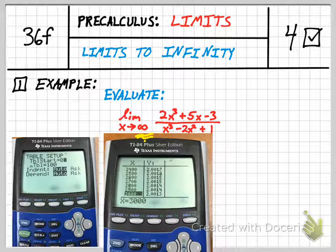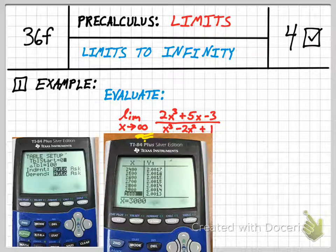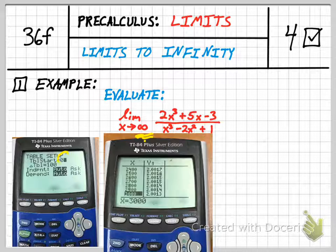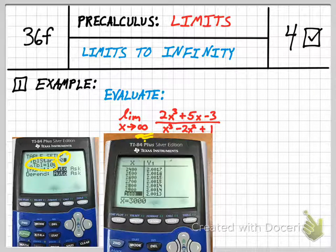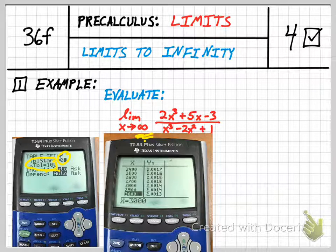Alright, so big difference here is how we set our table up. The starting point is less important because you can kind of start anywhere. But what's really important is that your step size, instead of being really small, should be really big. What I want to investigate is x becoming larger and larger and larger. So I picked 100, but you might even want to do 1,000 or 10,000. But 100 is a good base value.